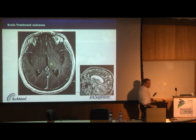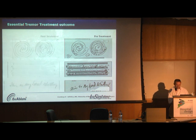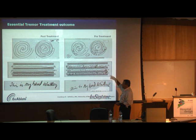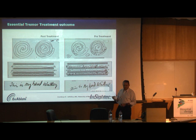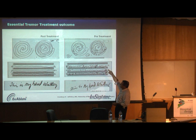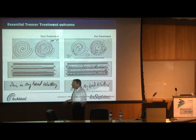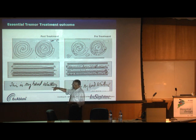Here you can see the outcome of the treatment: a sphere of about three millimeters in diameter that the system destroyed inside the brain. The effect is the following: a patient suffering from essential tremor is asked to draw a straight line following a template spiral — this is before the treatment, and this is at the end of the treatment. The whole session is about three hours, and the actual treatment is about 15 minutes.